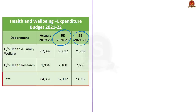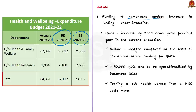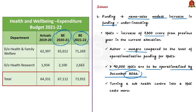Based on the above information, the author lists the issues in the health sector, especially in the implementation of schemes. Firstly, the author criticizes funding, stating that there is just a namesake modest increase which is nothing but under-investing. For example, for health and wellness centers there is an increase of only 300 crore from the previous year, which is a meager amount compared to the level of operationalization pending. More than 90,000 centers are to be operationalized by end of 2022, requiring a huge amount of money. Turning a sub-health center into a health and wellness center also costs more than transforming a primary health center.